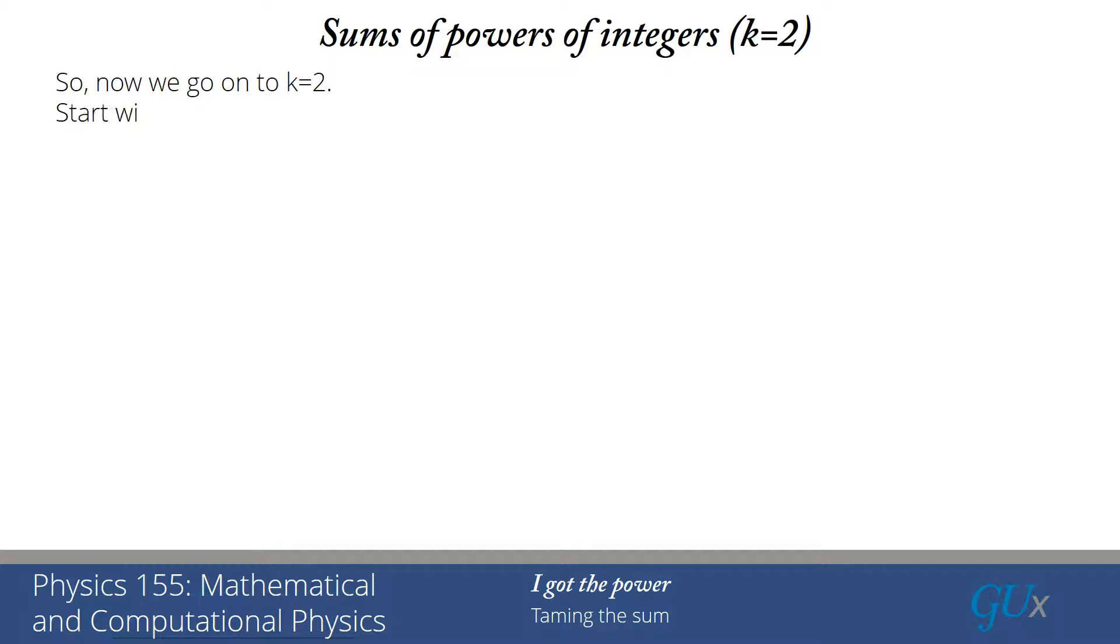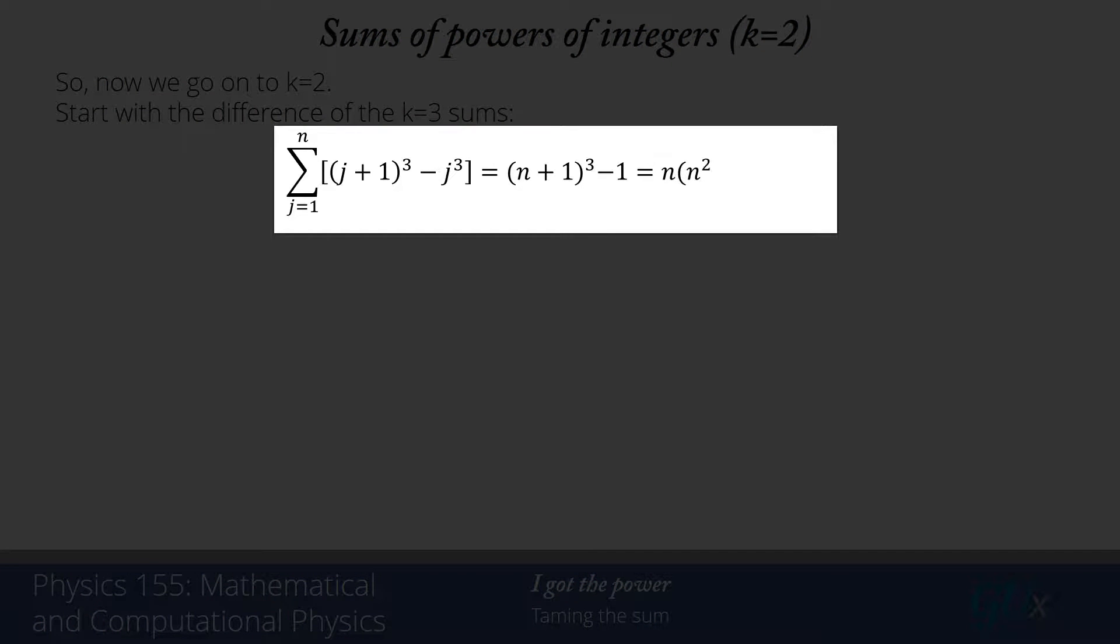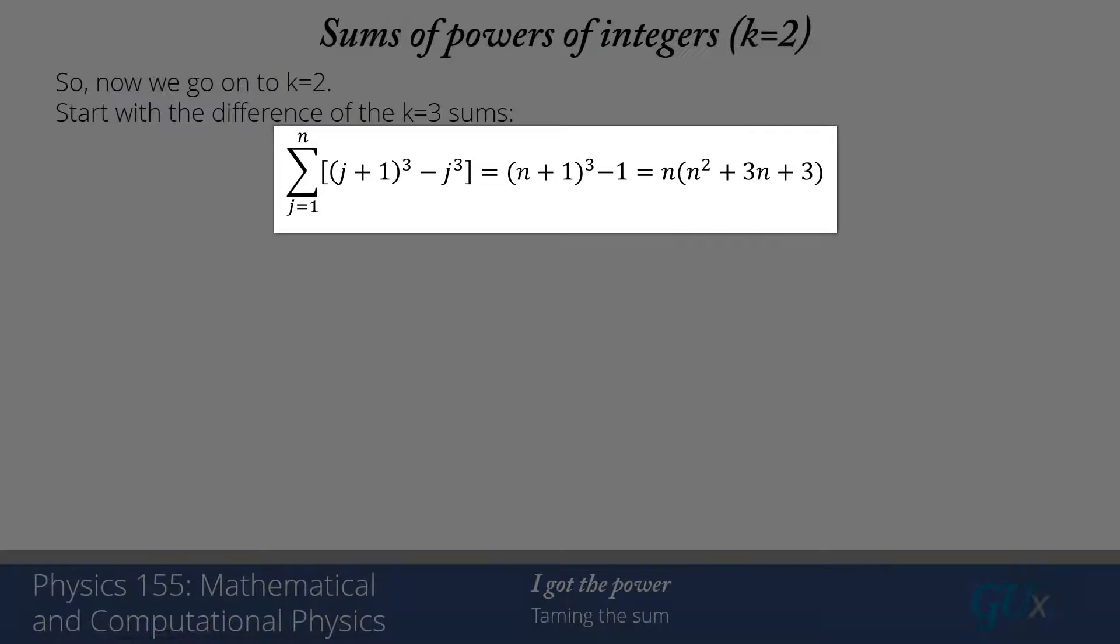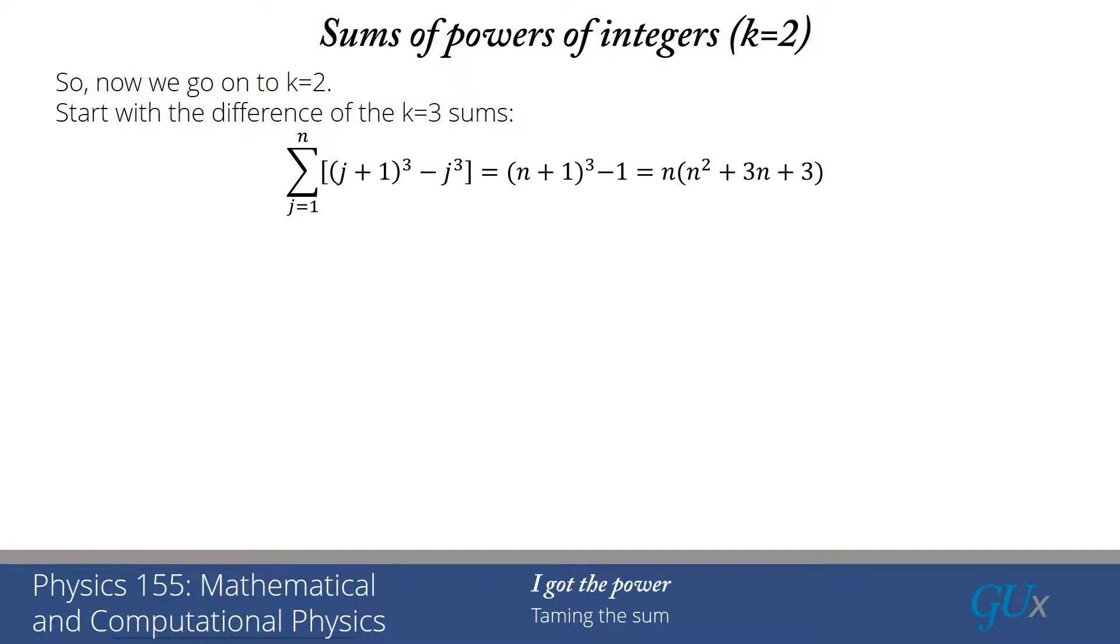So let's show how you do it now for k equals 2. Once again remember we have to start with one power higher than the one that we're interested in. So we look at the k equals three sums. Sum j equals 1 to n of j plus 1 cubed minus j cubed. Every term cancels except the first and the last term. So I get n plus 1 cubed minus 1. If I expand that out and cancel out the 1 minus 1 I'm left with n times n squared plus 3n plus 3. I leave it as an exercise for you to verify that.